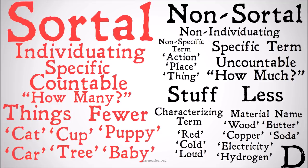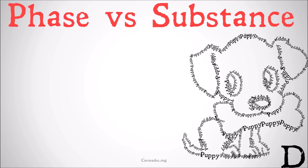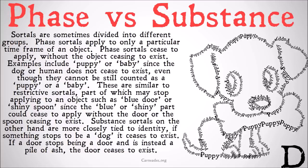Now we're going to take a quick look at the difference between a phase and a substance sortal. Sortals are sometimes divided into different groups. Phase sortals apply only to a particular time frame of an object — a phase sortal ceases to apply without the object ceasing to exist. Examples include 'puppy' or 'baby,' since the dog or human doesn't cease to exist even though they can no longer be counted as a puppy or baby. Phase sortals are similar to restrictive sortals, part of which may stop applying — such as 'blue door' or 'shiny spoon' — since the 'blue' or 'shiny' part could cease to apply without the door or spoon ceasing to exist.